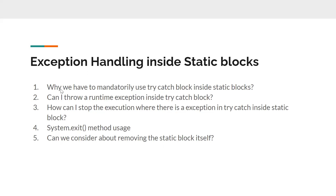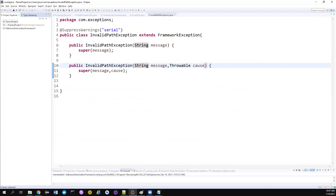In this video we're going to see why we have to use a try-catch block inside a static block — it's kind of mandatory when you want to handle checked exceptions. We'll also check whether we can throw runtime exceptions inside static blocks, and how we can terminate the program when an exception happens inside a static block. There is a method called exit in the System class we'll look at. Finally, we'll think about whether we should use static blocks in our framework or remove them.